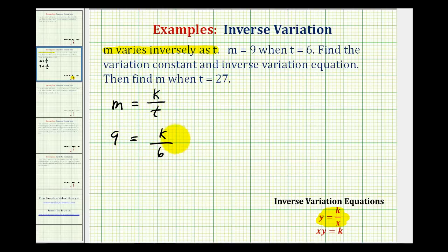Now to solve this for k, we'd multiply both sides by six. This simplifies to one, so we have 54 equals k, or k equals 54, which is our variation constant.